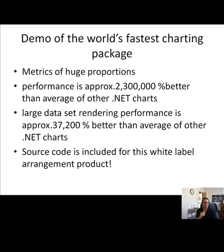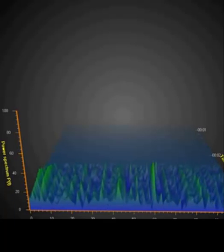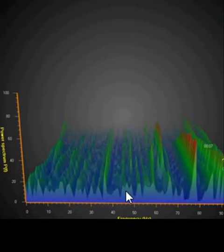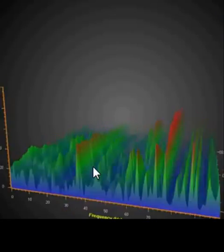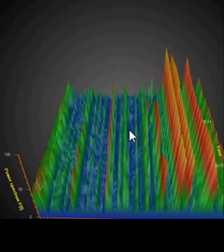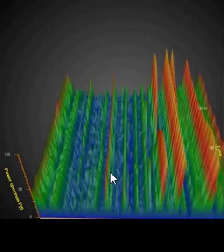It can handle large data sets with a render performance of approximately 37,000 times better than any other average .NET package, and the overall performance is approximately 2.3 million times better than any average .NET charting package. Source code can be included for a white label arrangement. You can see the rendering for real-time charting is absolutely stunning at 3D level — this is what gives you the edge.